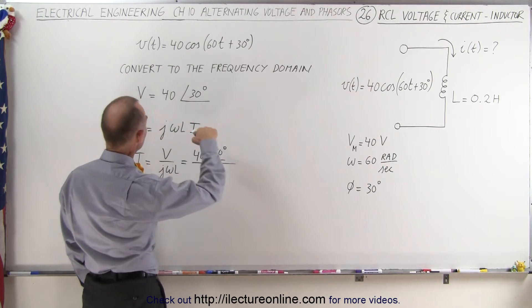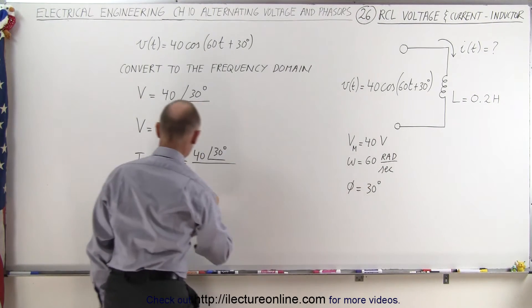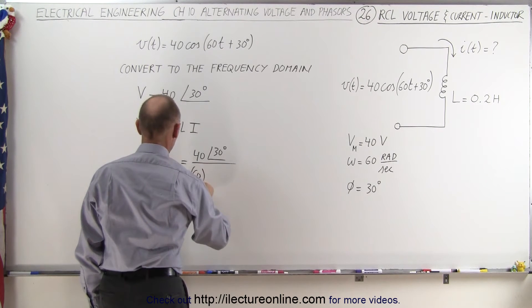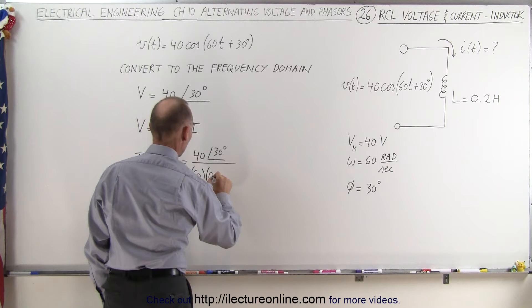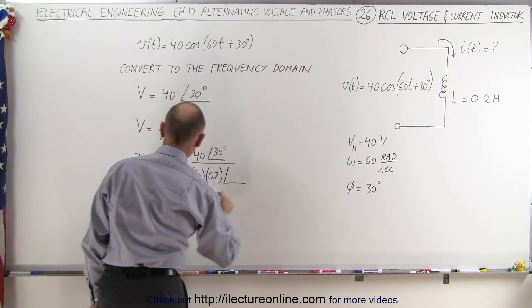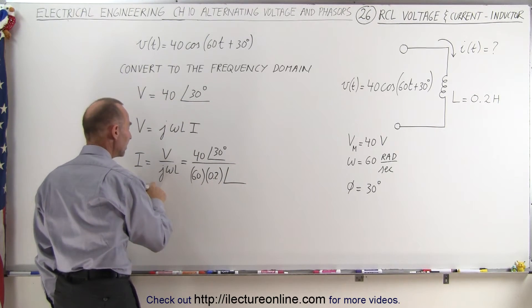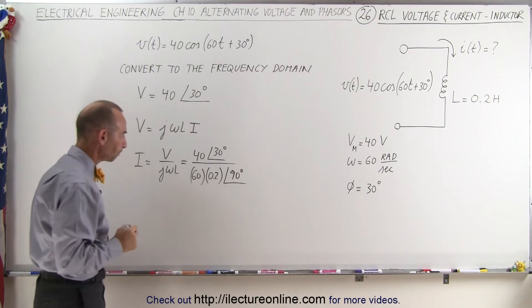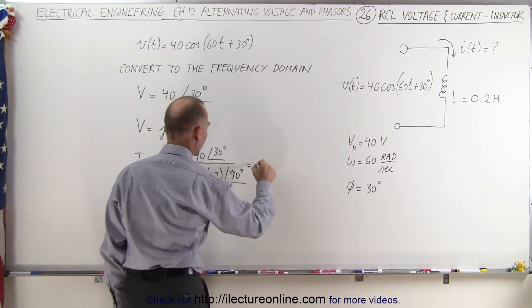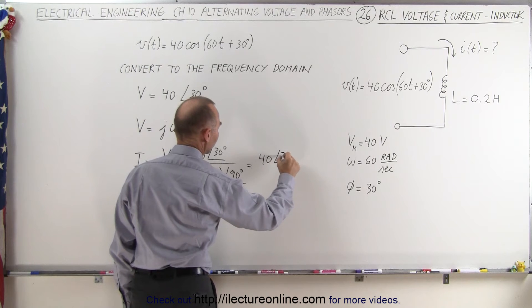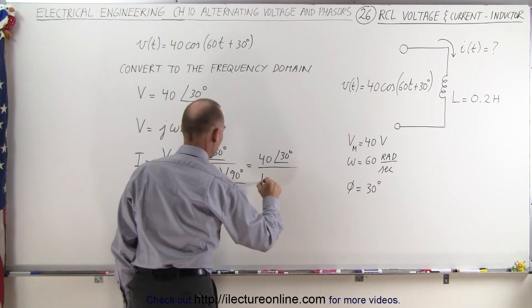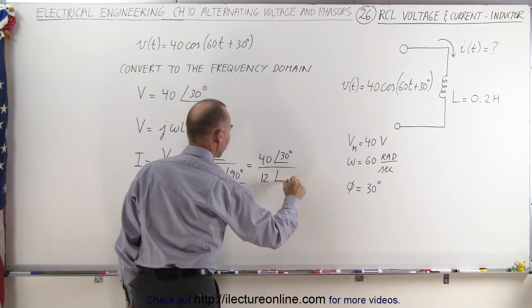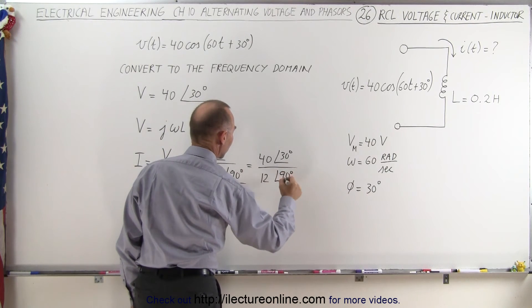Omega was equal to 60, so here we get 60 multiplied times L, L is equal to 0.2, and then a phase angle here of 90 degrees. And this then reduces to 40 with a phase angle of 30 degrees divided by 0.2 times this, that would be 12 and a phase angle of 90 degrees.